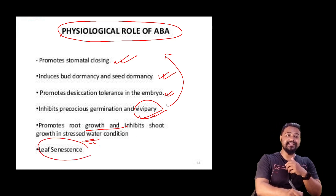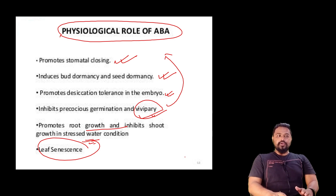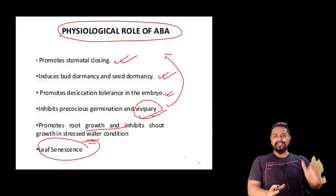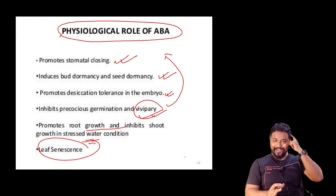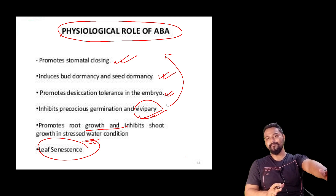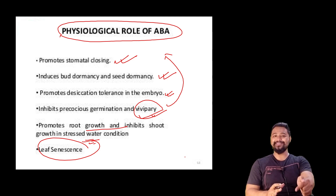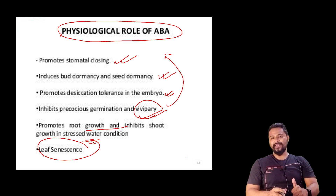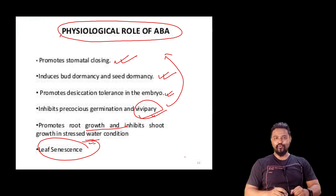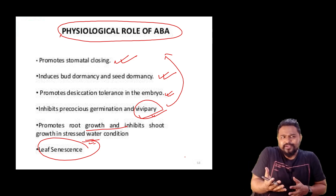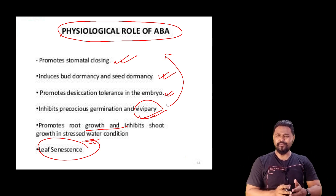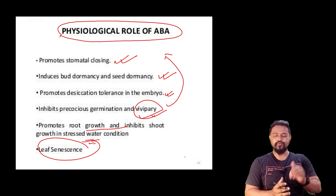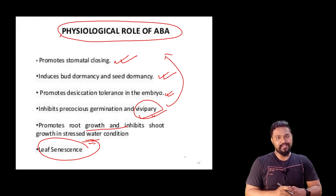Abscisic acid also promotes leaf senescence. That covers all the physiological roles of abscisic acid. You can check my other videos linked below. If you liked this video, please like, subscribe to my channel and share it. Notes can be downloaded from the link given below. Thank you, see you in the next class.